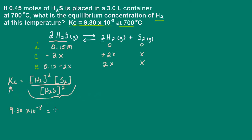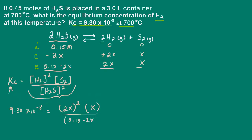Let's plug in the concentrations. For hydrogen at equilibrium we have 2X, so that's (2X) squared — don't forget the exponent, because a lot of times students forget it and get the wrong answer. Times the concentration of sulfur, which is just X with no exponent since the coefficient is 1. Divided by the concentration of H2S, which is (0.15 minus 2X) squared. We need to solve this expression for X.